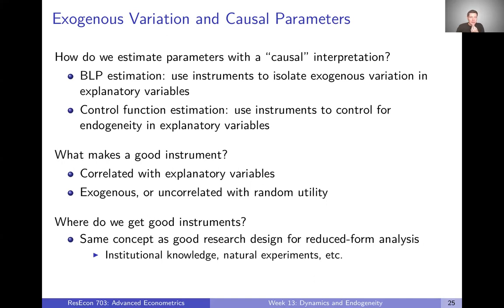So that sounds like a big concern. How do we estimate parameters with the correct interpretation? We're going to talk about two things in the next two videos. First, BLP estimation, where we use instruments to isolate exogenous variation in explanatory variables. Second, control function estimation, where we use instruments to control for endogeneity in our explanatory variables. In both cases, we're going to have to use instruments.